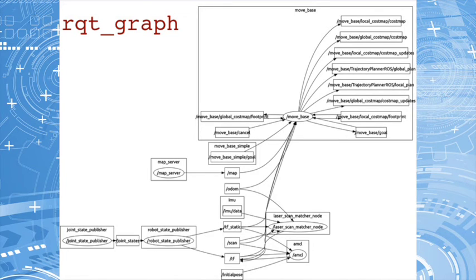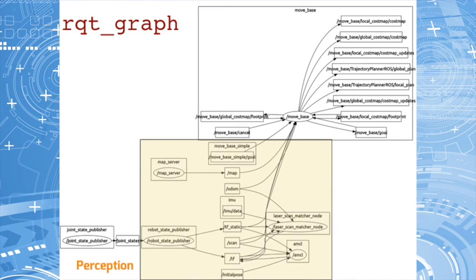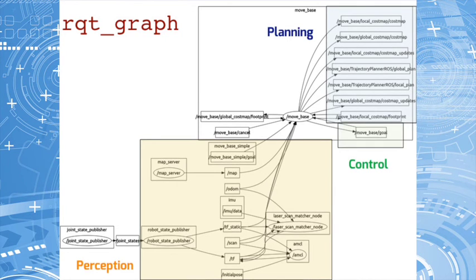As before, you should now be in a position to identify the perception, planning, and control nodes within this graph. So that was a brief overview of what ROS is, how it works, and what are some essential ROS commands.